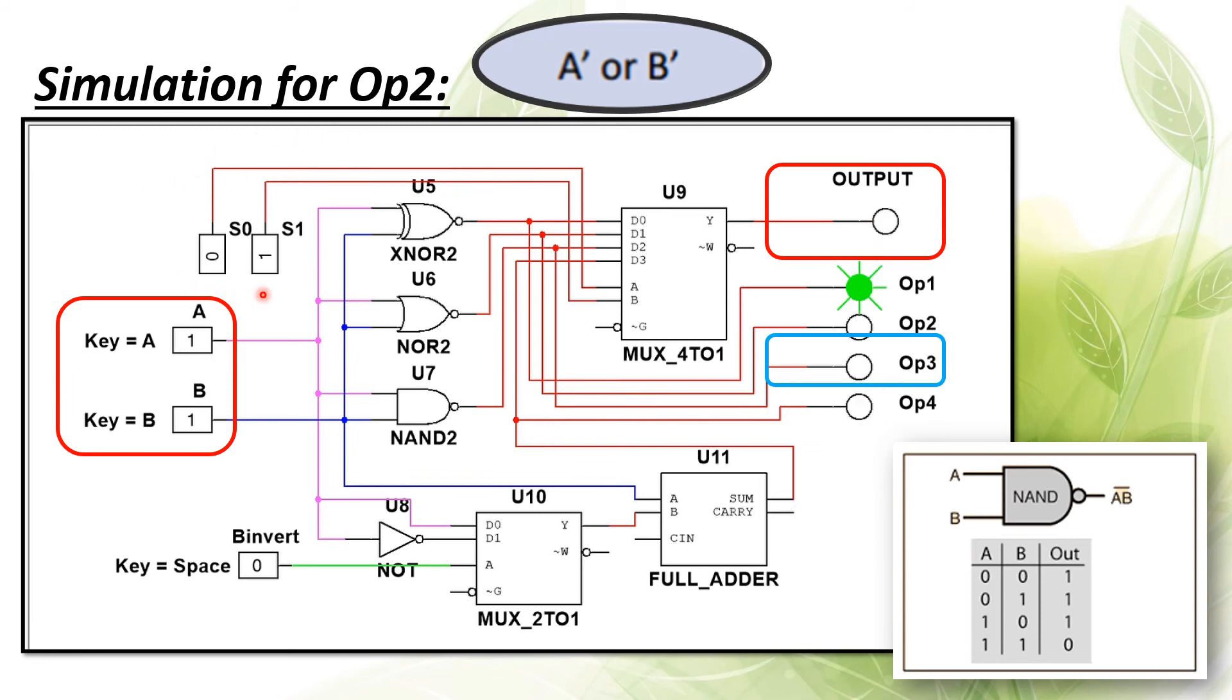For operation two, we will set only S1 to be one and set back S0 to zero to test out the NAND gate here. We found that the output is the same as the truth table here.